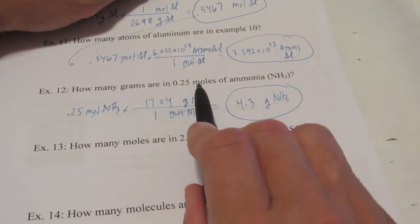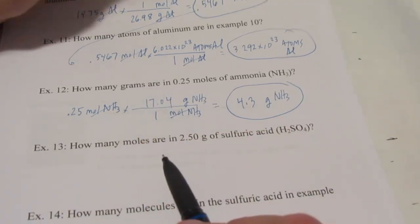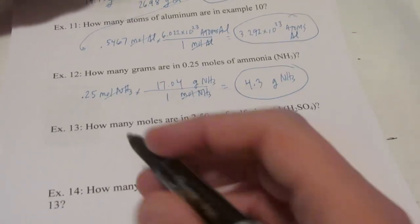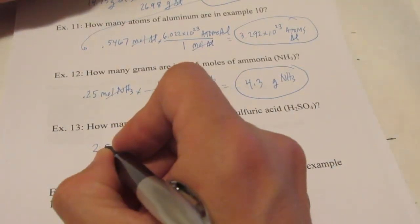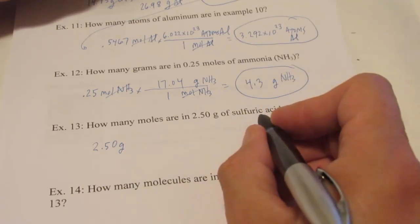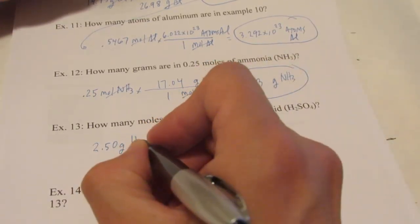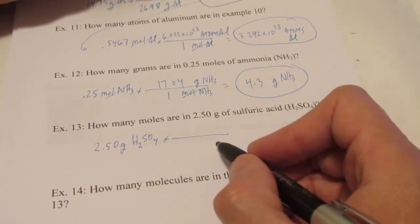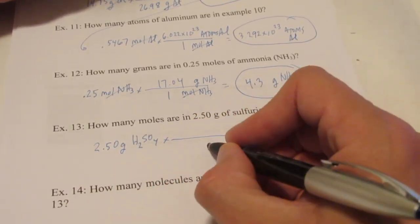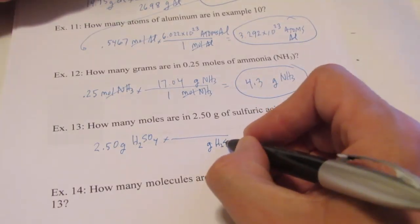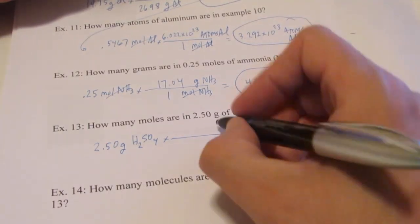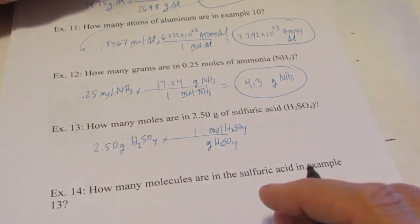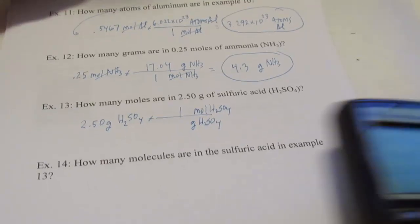Alright, now, I just gave you moles and we found grams. Can we go the other way around? Can I give you grams and find moles? Absolutely. You should be getting the hang of this now. 2.50 grams of sulfuric acid, which is H2SO4. This time, what unit goes on the bottom? Right. Grams of H2SO4. And we want to get into moles of H2SO4. Put a 1 by mole.